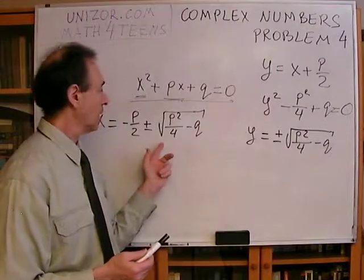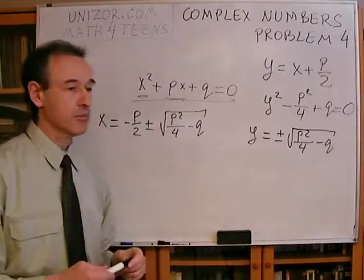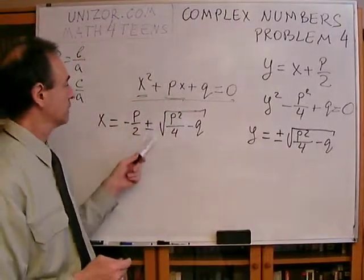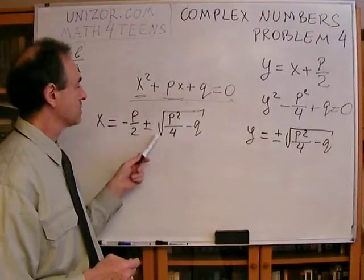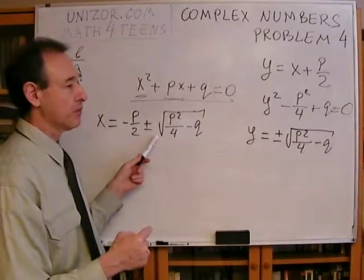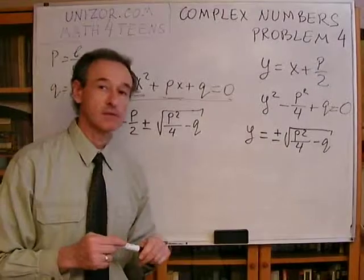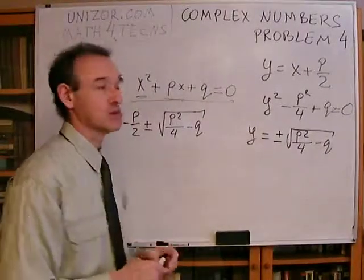Or, if, under the square root, I have a negative number, then I have two complex numbers with imaginary parts having opposite signs, which is exactly what was required.